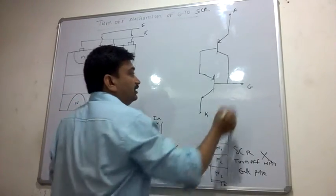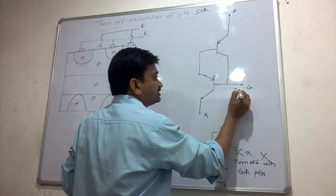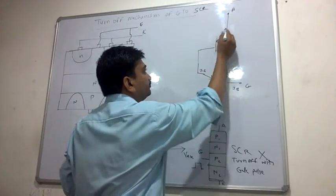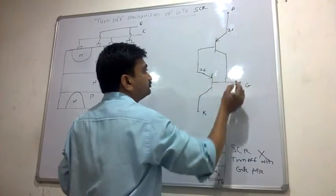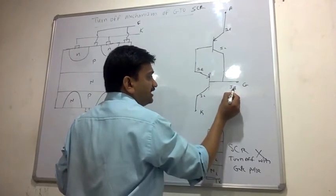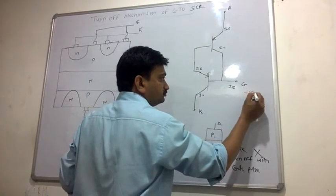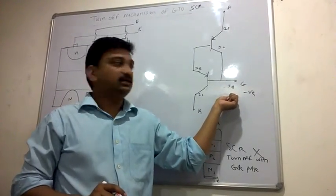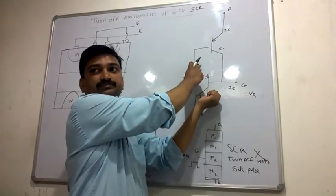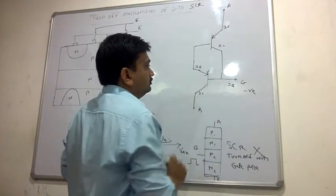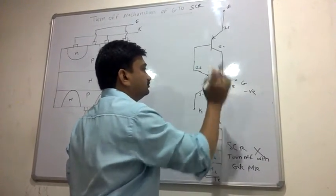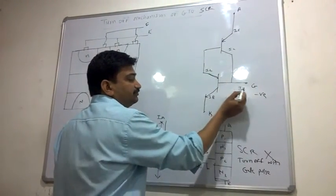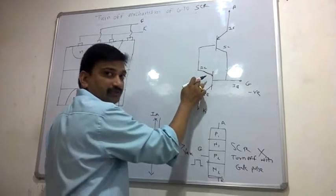According to the two-transistor analogy, the gate is the base. When you provide a negative pulse or negative voltage to the gate, the base current IB is reduced, and as a result the emitter current also reduces. The collector current IC also reduces as the base current decreases.